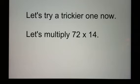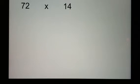Let's try a trickier one now. Let's multiply 72 times 14. So again, I'm going to draw the line underneath. And in the column under the multiplicand, I'm going to be cutting in half. 72 in half is 36. 36 cut in half is 18. 18 cut in half is 9.